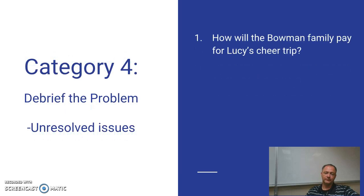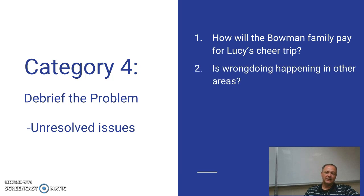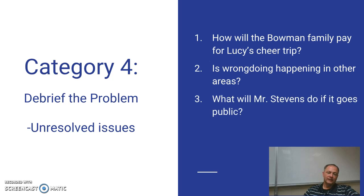Some unresolved issues remain: we still don't know how the Bowman family is going to pay for Lucy's cheer trip — maybe we could meet with her and talk about potential fundraising the family could do outside of school. We don't know if wrongdoing is happening in other areas, which would have to be explored through conversations with the PTA and other schools. And we don't know what Mr. Stevens will do if it goes public — how he'll do damage control and maintain a positive attitude about his school.